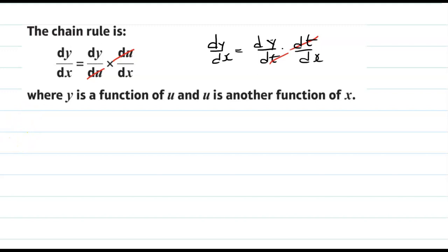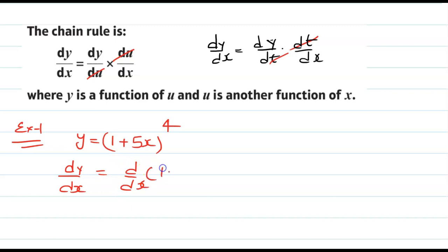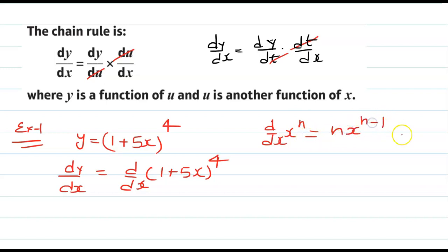Example 1: let us take y equal to (1 plus 5x) to the power 4, and we need to differentiate it with respect to x. When differentiating with respect to x, we can write dy over dx as d over dx of (1 plus 5x) to the power 4. We know that d over dx of x to the power n is nx to the power n minus 1.